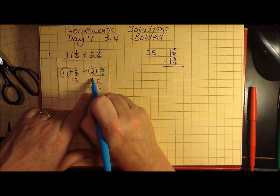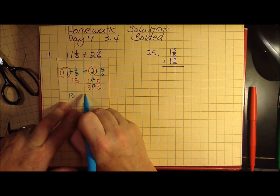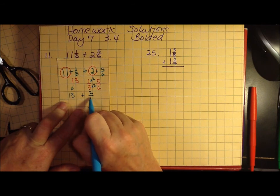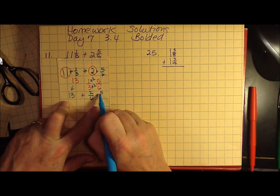What I do to the bottom, I have to do to the top. So now I have 13 plus 2 times 1 is 2 over 6, plus 5 over 6.